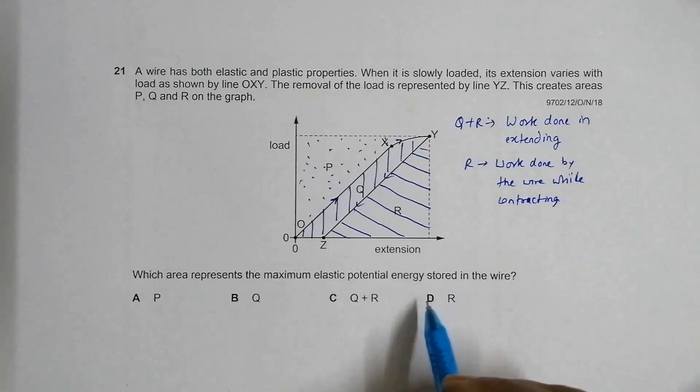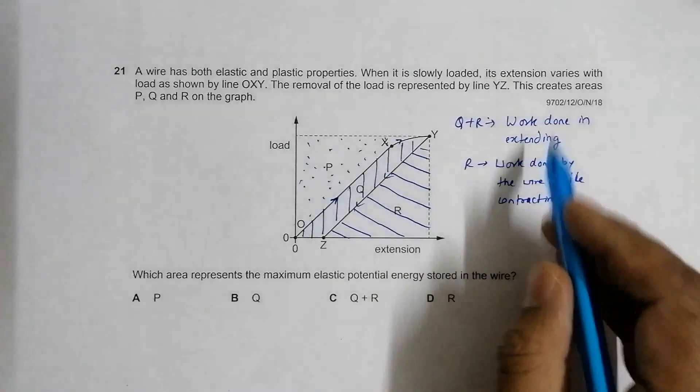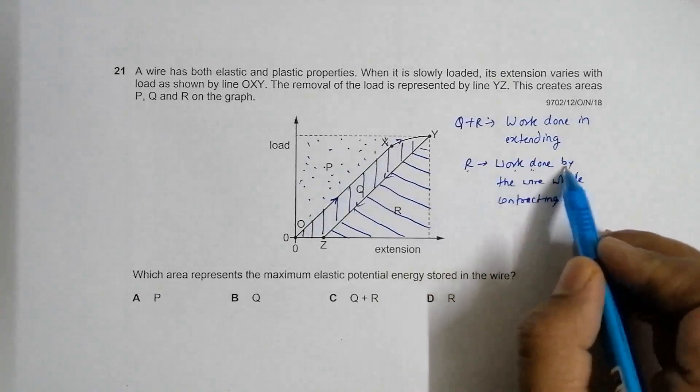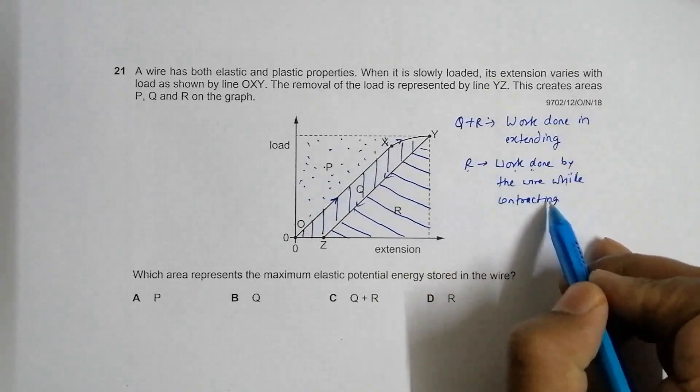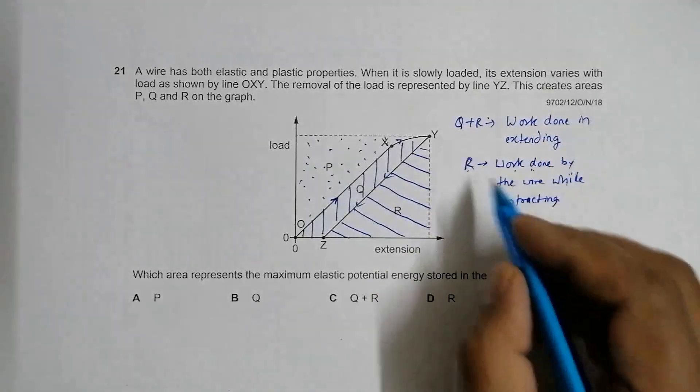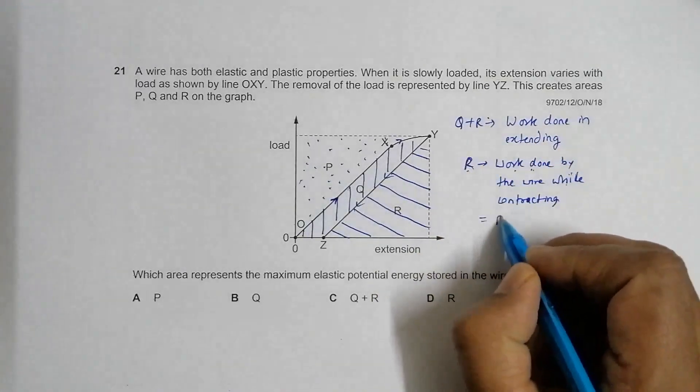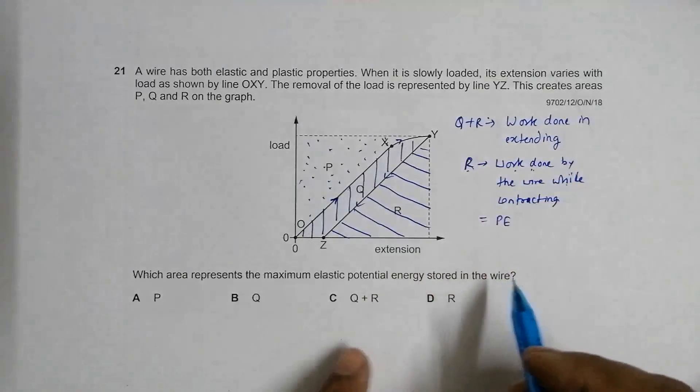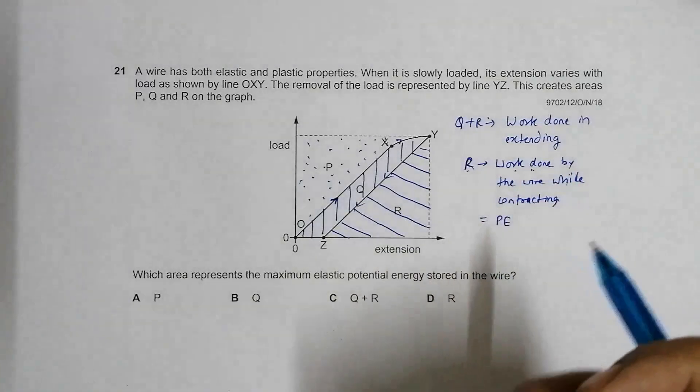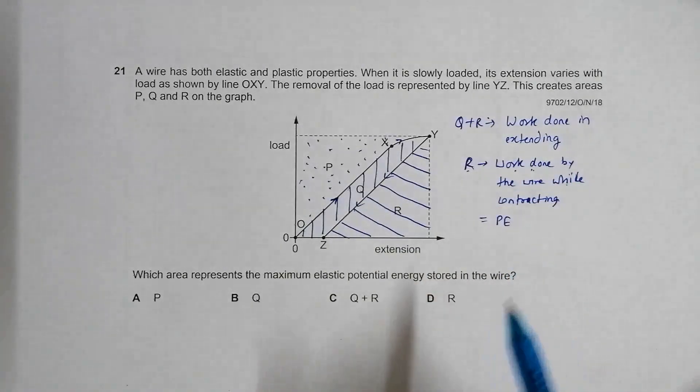The elastic potential energy is the amount of work the wire can do. This R represents the work done by the wire while it contracts, so R should equal the elastic PE stored in that wire. PE means the energy stored in it, because of which it can do work or give us back some work.